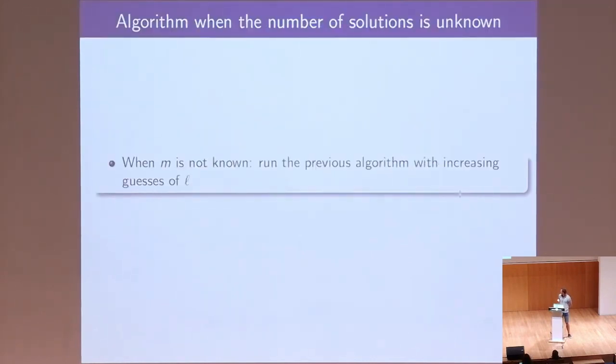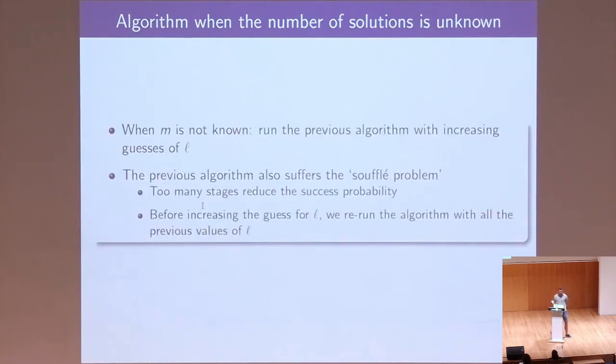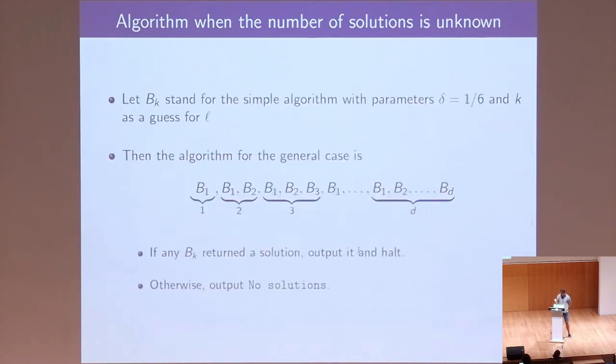And when we do not know how many solutions there are, or if any, then we don't know how many stages we need to run, and we simply try increasing values of this L, which corresponds to exponentially decreasing guesses for M. The problem is that this previous algorithm, if we run it for too long, its success probability will decrease, and to deal with that, we will rerun, before increasing the value for L, we rerun this simple procedure with all the smaller values for the number of stages. So basically, the overall algorithm looks like this, when we repeat the simple procedure with one stage, with two stages, and so on, before increasing to three stages.